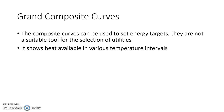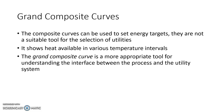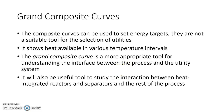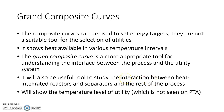The composite curves can be used to set energy targets. When plotted on shifted or actual temperature, they tell you the amount of hot or cold utility minimum required. However, they do not tell you the proper temperature at which to supply that utility — they show only the quantity requirement, not the quality of the utility requirement. That quality information can be seen with the help of the Grand Composite Curve, which is a more appropriate tool for understanding the interface between the process and the utility system. It is also useful to study the interaction between the process and other units like reactors or distillation columns.